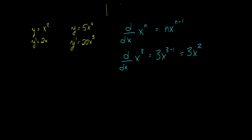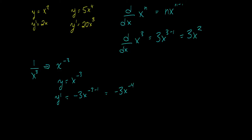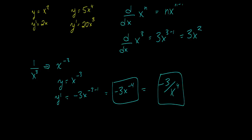You can test this using the definition of the derivative, or you can take my word for it. What if we have 1 over x cubed? Well, 1 over x cubed is the same thing as x to the negative 3rd. So if y equals x to the negative 3rd, then y prime equals negative 3x to the negative 4, which you can rewrite as negative 3 over x to the 4th. You can leave it either way — this one looks a bit nicer, but it's not required.